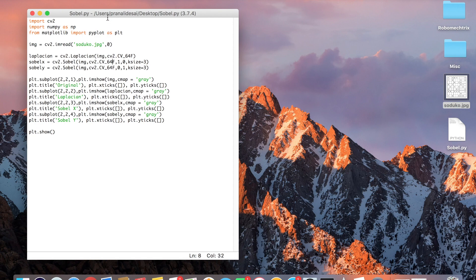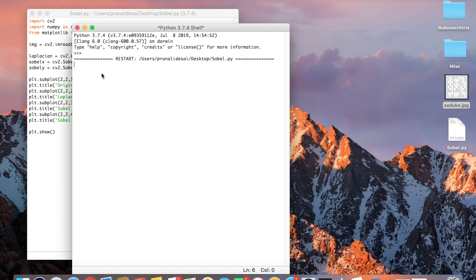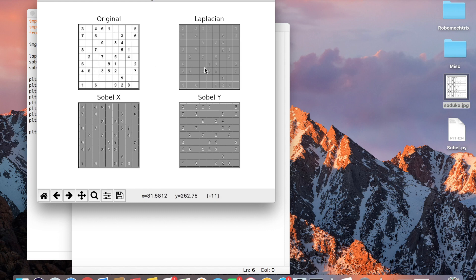Now I'll be plotting four different plots over here. The first plot is the original image. The second is taking the Laplacian of it or the first derivative. Sobel X is this one and Sobel Y over here.